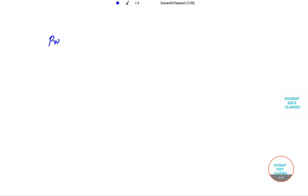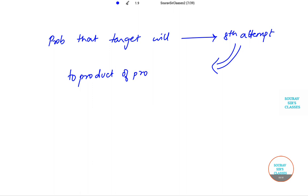Here we have to find the probability that target will be hit in eighth attempt. This particular probability is equal to the product of probability of failure in the sixth and seventh attempt.